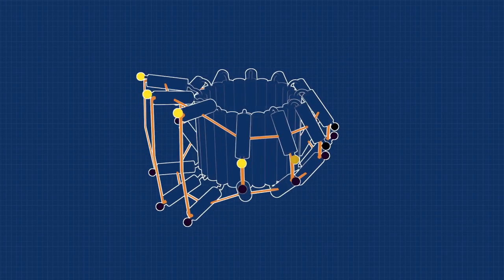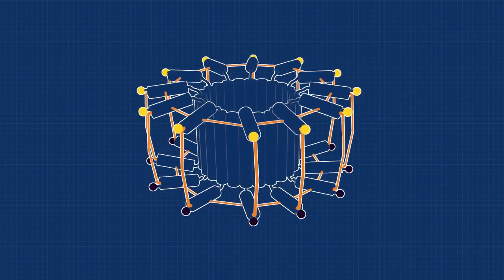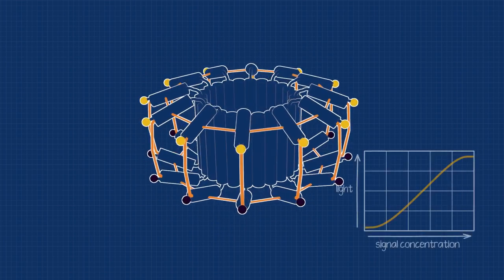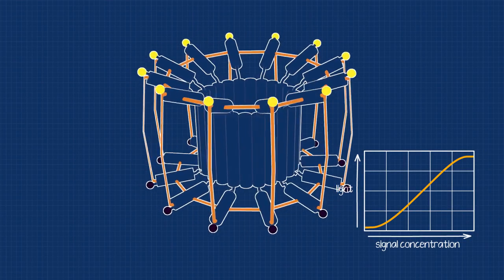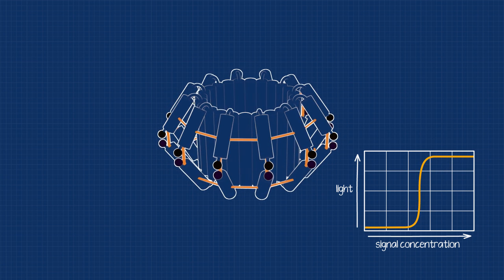So that when one of them binds a signal, its neighbors are more likely to also bind a signal. By adjusting the length of the linking bands and the signal threshold, it's possible to fine tune both the cooperativity and sensitivity of the biosensor.